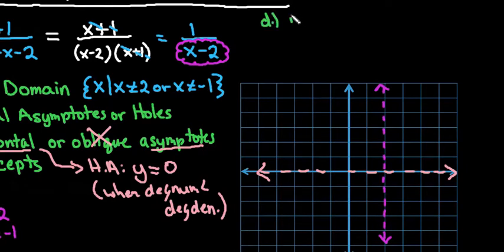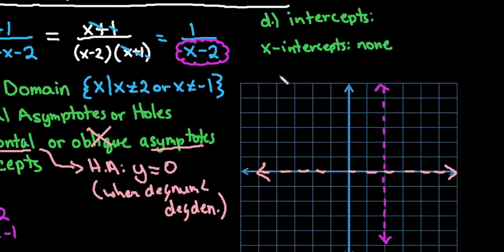We're going to talk about the intercepts. For x-intercepts, we're not going to have any. And the reason is, in simplified form, there are no variables in the numerator.